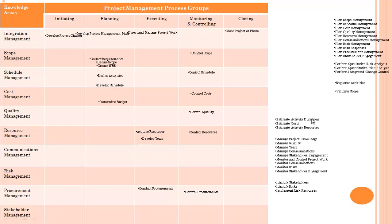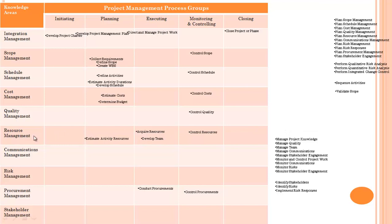Estimate activity duration will come under schedule management. Estimate cost will come under cost management. Estimate activity resources — all these estimates mean we are planning, so they will come under planning process group.